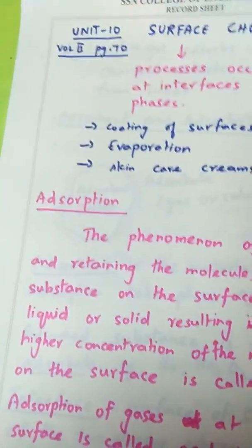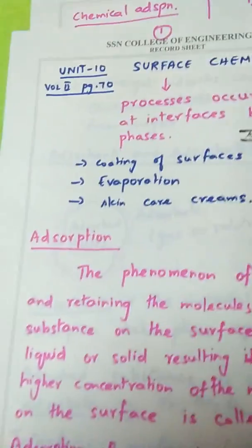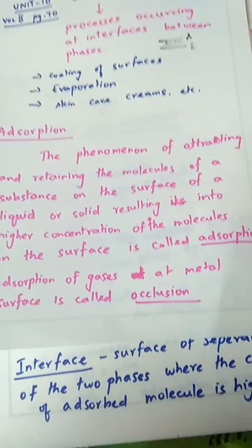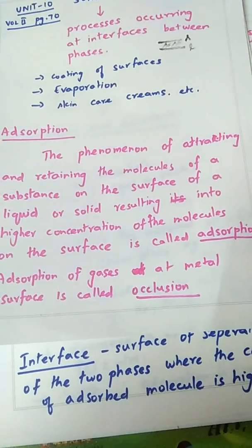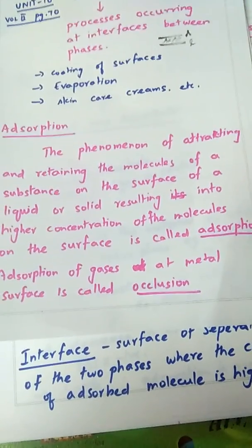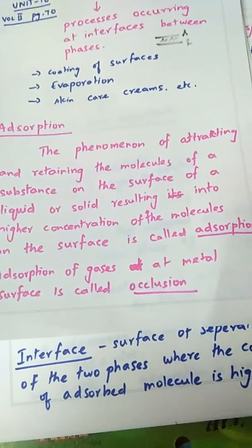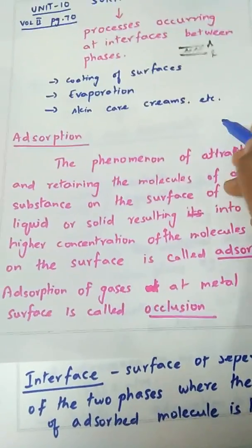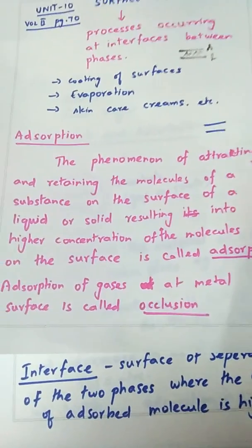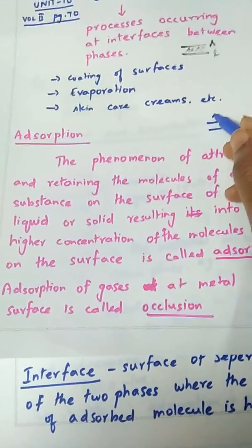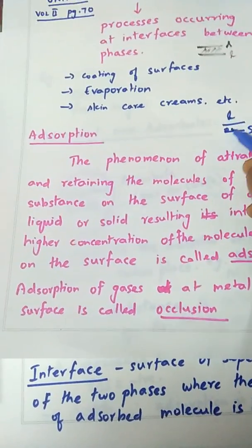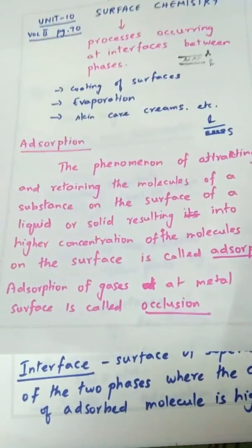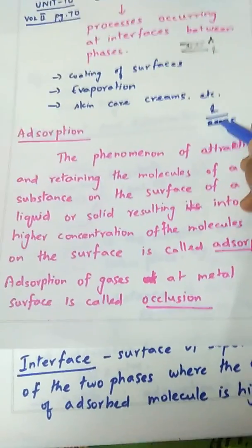In order to understand surface chemistry, you need to know about an important process called adsorption. Adsorption is a phenomenon of attracting and retaining the molecules of a substance on the surface of a liquid or solid, resulting in a higher concentration of molecules at the surface. Whenever there is an interface, the molecules of one phase, say liquid, get adsorbed on the other phase, say solid.